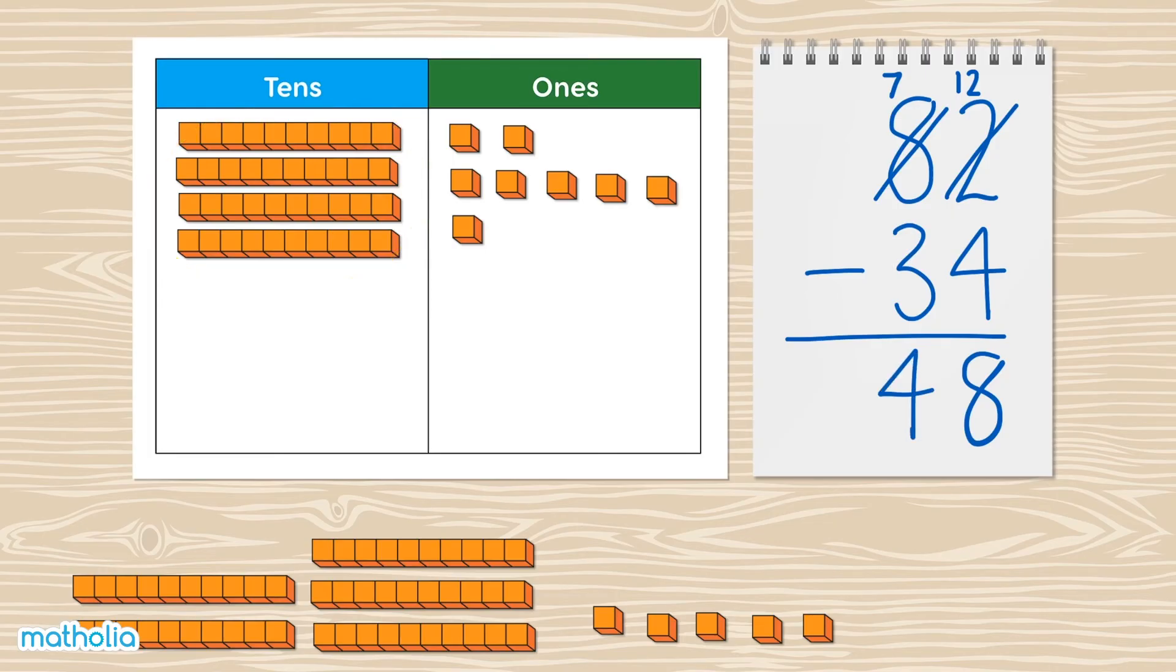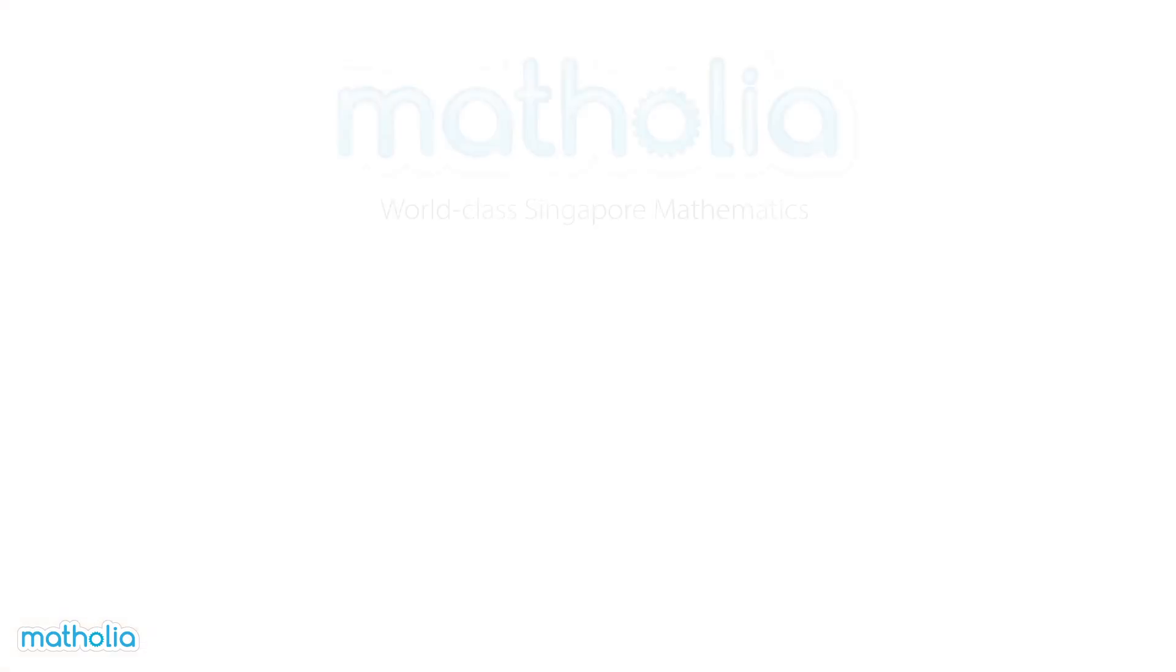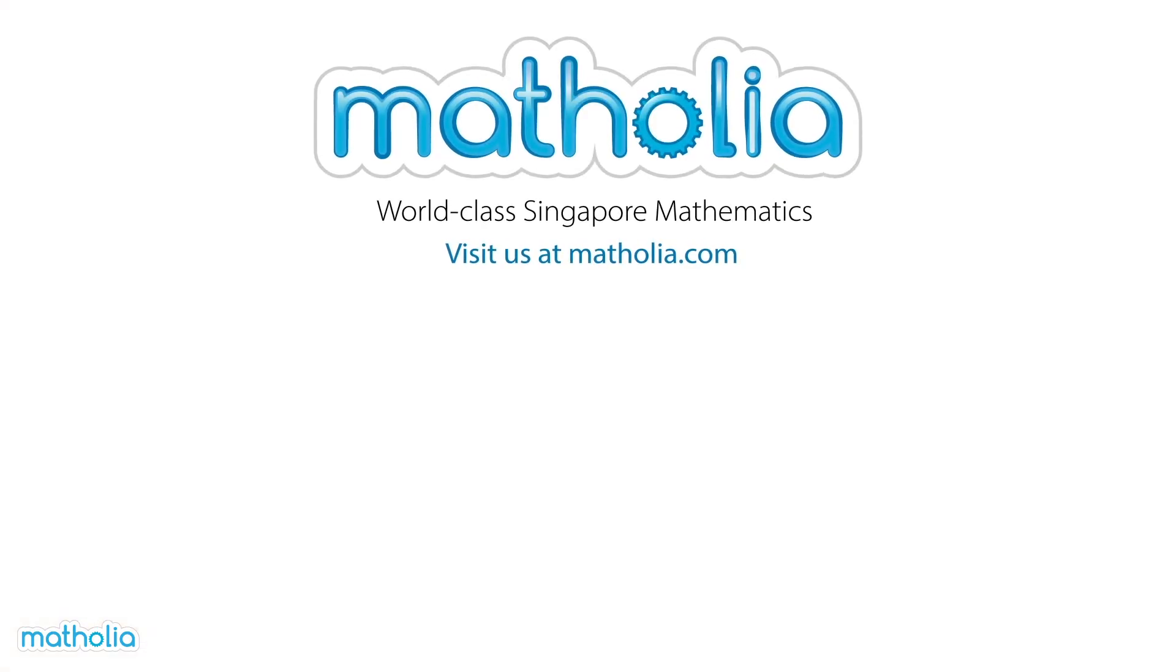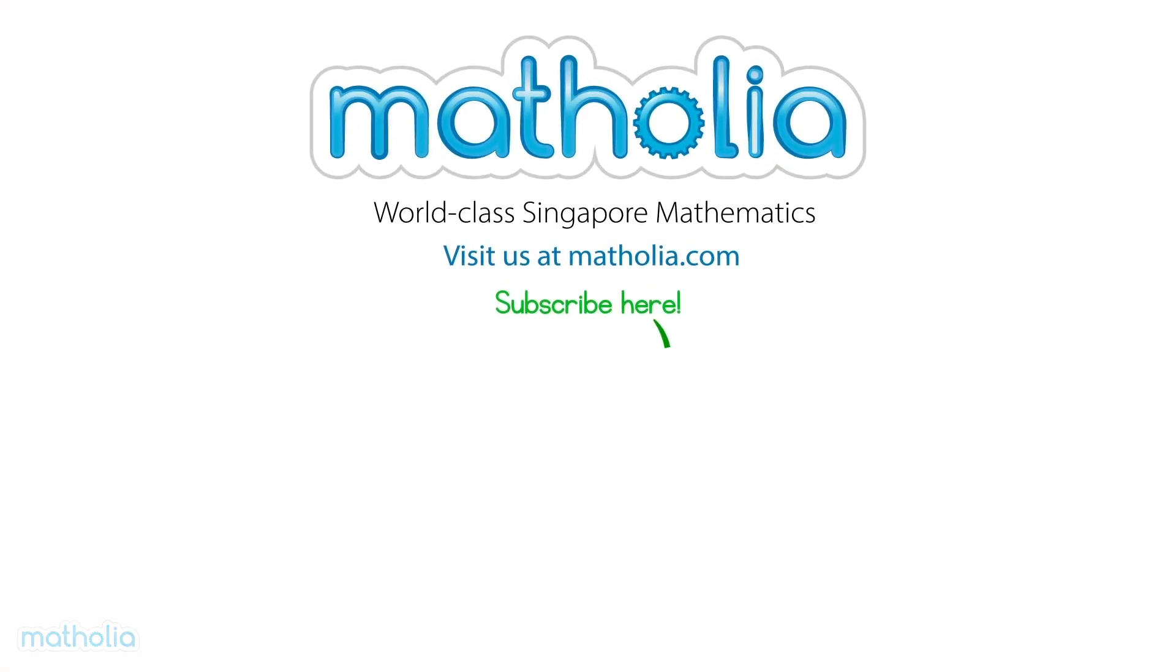column. We're all done, so 82 subtract 34 equals 48. In the next video we'll use bar models to help subtract. Don't forget to subscribe.